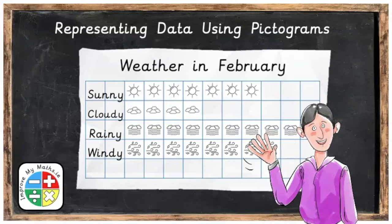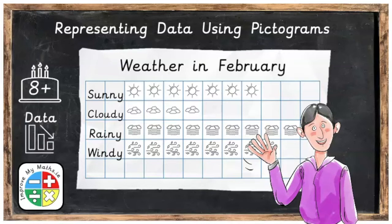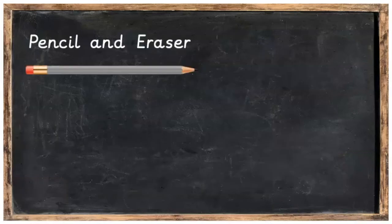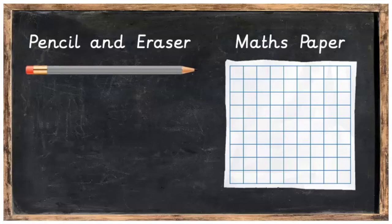Hi everyone, in this lesson we're going to be representing data using pictograms. This topic is part of the data area of maths and it's suitable for children who are eight years and older. For this lesson you will need a pencil and eraser and a page of lined maths paper to do your sums.